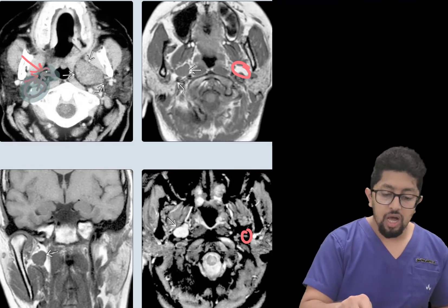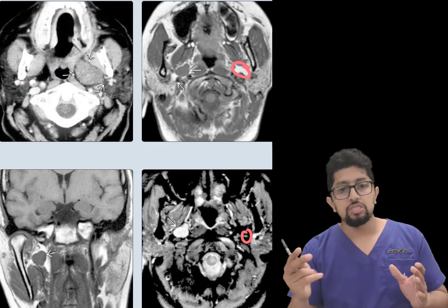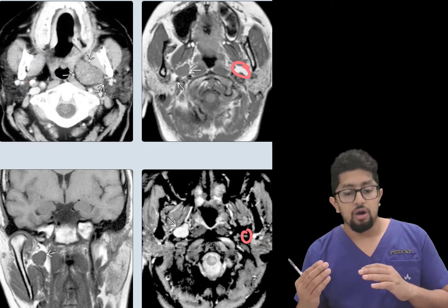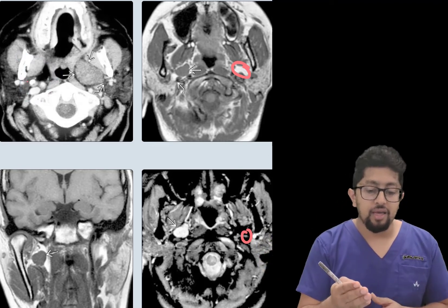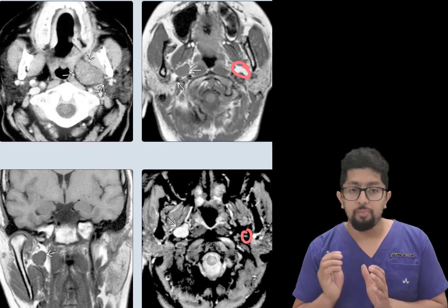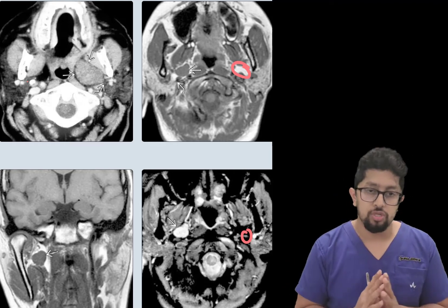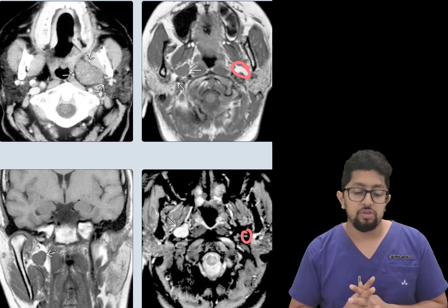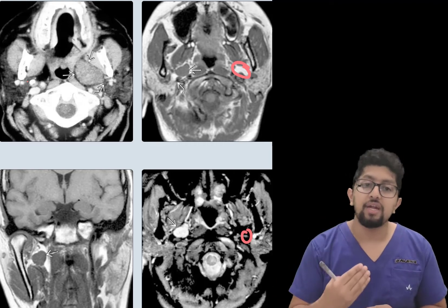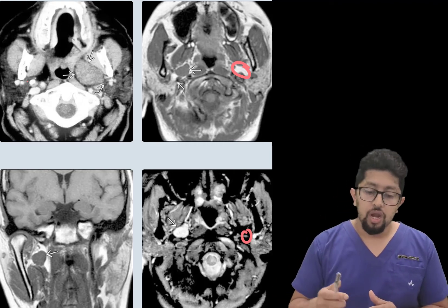This is how different lesions in the neck spaces, when they arise, have a relation to the parapharyngeal space. The direction in which they push the parapharyngeal space is how we identify the origin of the lesion.